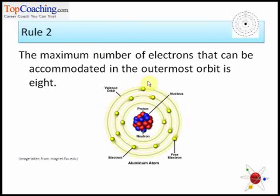And rule 2 was maximum number of electrons that can be accommodated in outermost orbit is 8. We will do numericals on the same and try to understand this.